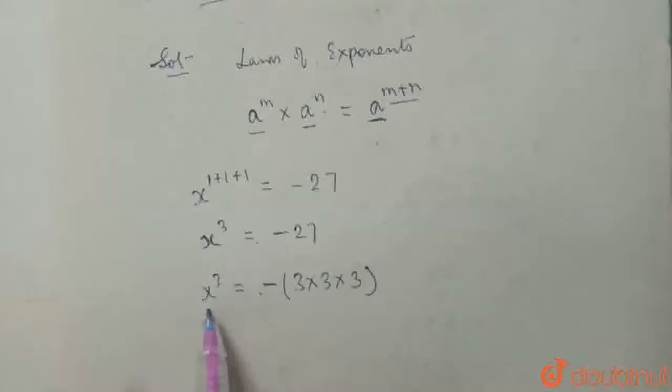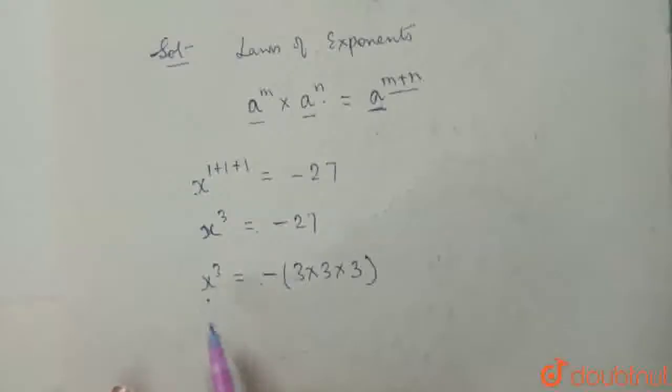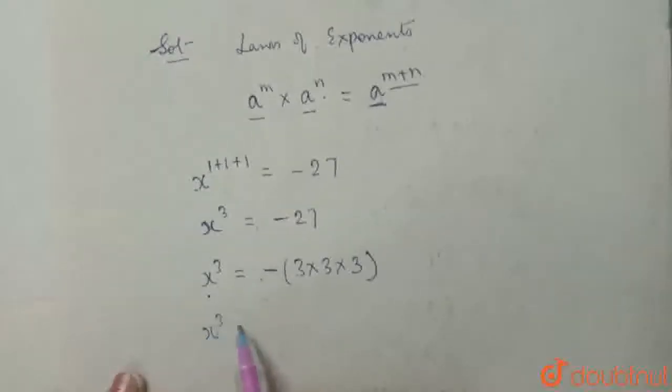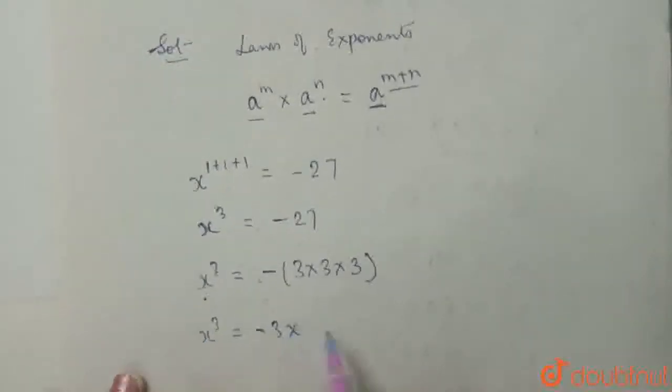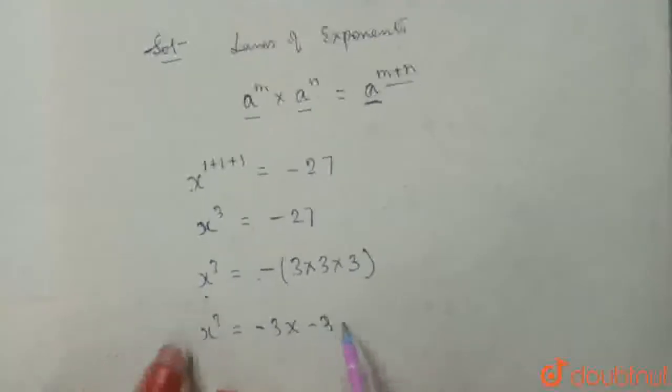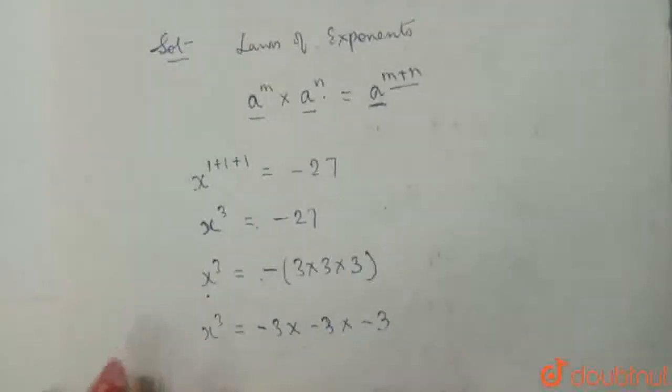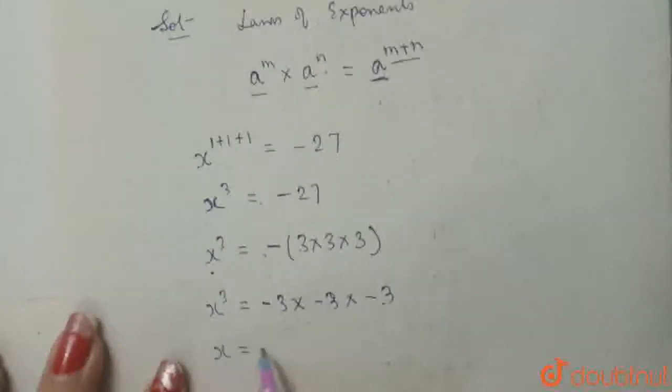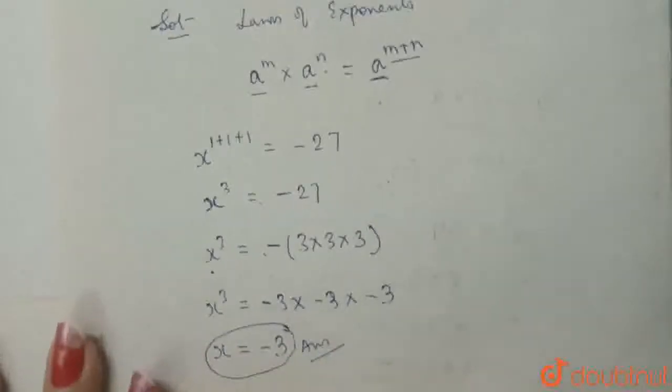that is anything raised to power an odd number is negative, then that number will be negative. So that means x cube can be written as minus 3 times minus 3 times minus 3, that means x is equal to minus 3 is the answer of the given expression,